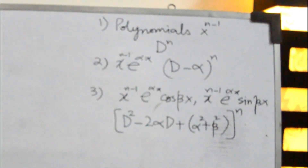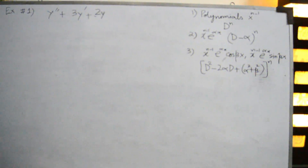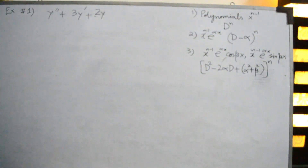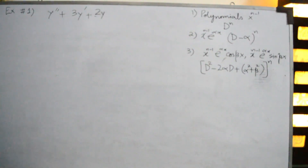The particular solution along with the complementary solution can be found directly using the annihilator operator without heavy calculations. Note that, just like the method of undetermined coefficients, this method is not applicable for functions like natural log of x, 1/x, tangent of x, hyperbolic functions, or their inverses. Those cases we will study later, but now we will study the quick solution for higher order differential equations.